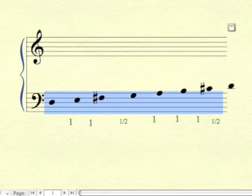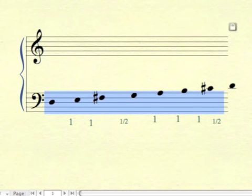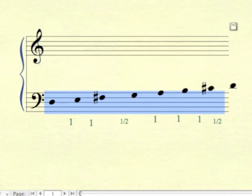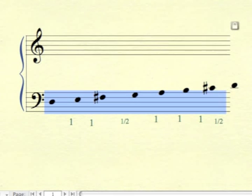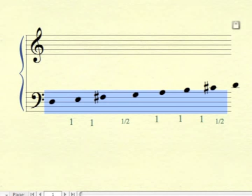This is also a major scale. It's written in the bass clef, and it starts on the note D. But otherwise, it's the same thing. Between the third note, which is F sharp, and the fourth note, G, that's a half step.